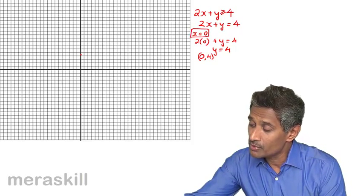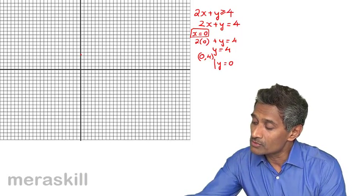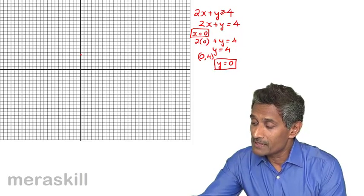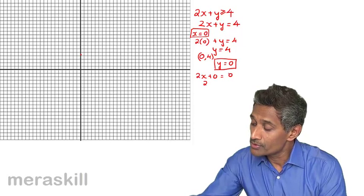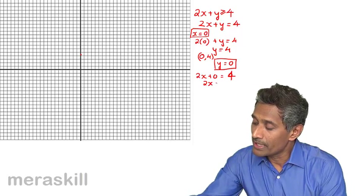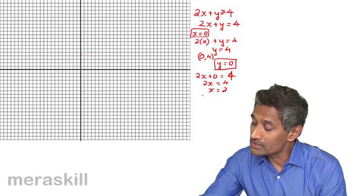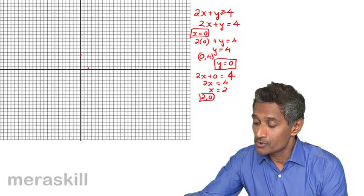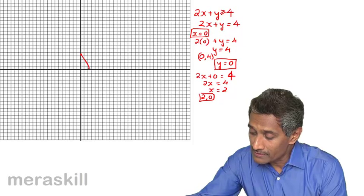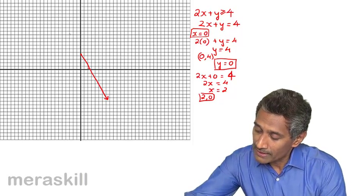We've taken one value. Let's take another value: y is equal to 0. If we substitute y as 0, we get 2x plus 0 is 4, so 2x is 4, hence x is 2. So this line would pass through (2, 0). When you join these two points, you get a line.